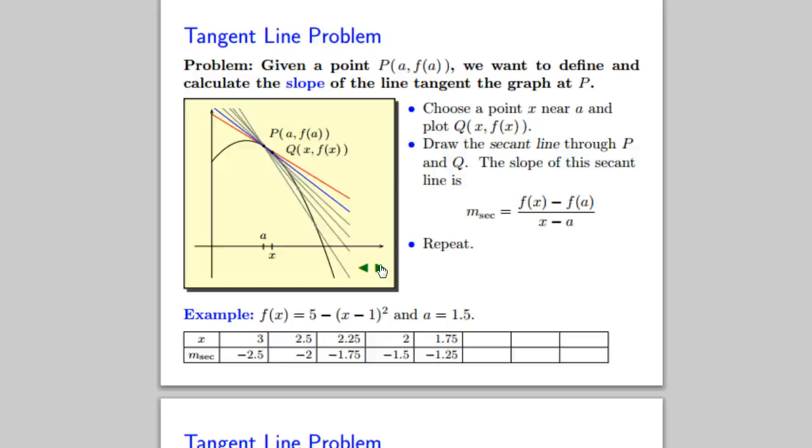Then we plug in 1.75 and we plug in 1.6. And remember, we are approaching this number, so this is definitely a limit. Then we approach it, we get a little bit closer, and we just keep approaching it. As you can see, the actual slope is actually approaching negative 1. So it's really cool how that works.